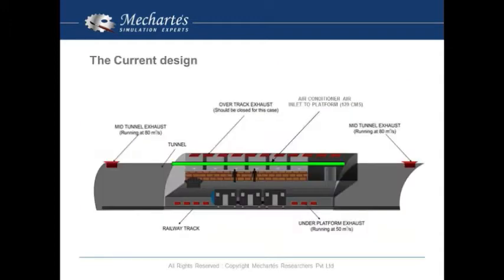The ventilation system that was existing was like this: There was a mid-tunnel exhaust running at 80 CMS, an under-platform exhaust running at 50 CMS, and an air-conditioned air supply at 120 CMS through the fall ceiling and ducted supply coming from the air handling unit.